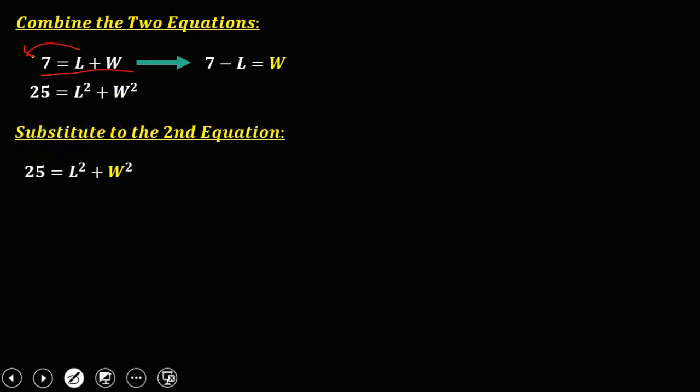This is the second equation. Take note that W is 7 minus L. So W is 7 minus L squared. Then simplify. Using this method, the SMS, the square of 7, that's 49, then multiply. So 2 times negative L times 7, that's negative 14L. Then the square of L, that's L squared.